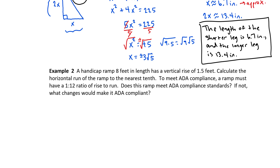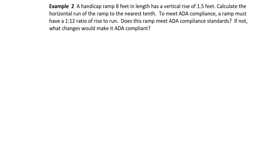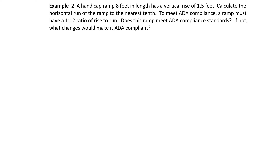Let's try another example using the Pythagorean theorem. Example 2: A handicap ramp, 8 feet in length, has a vertical rise of 1.5 feet. Calculate the horizontal run of the ramp to the nearest inch. To meet ADA compliance, a ramp must have a 1 to 12 ratio of rise to run. Does this ramp meet ADA compliance standards? If not, what changes would make it ADA compliant?